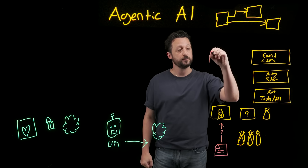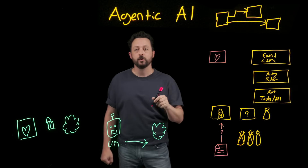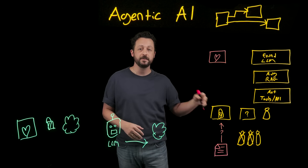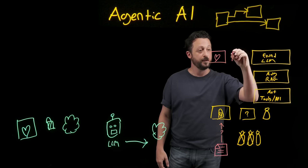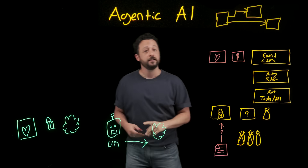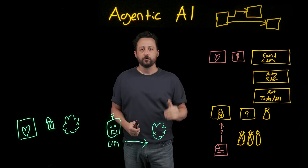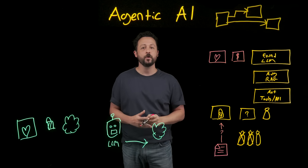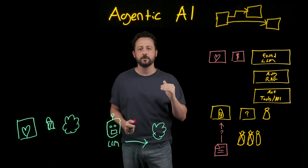This isn't just theoretical. Developers are building these private agents in the most regulated industries on earth. In healthcare, developers are building agents to help doctors summarize patient histories, craft emails, and track statuses. The agent retrieves data from electronic health records and references medical research, but the data never leaves the network. In financial services, teams at banks are building agents for fraud detection and customer service, where they analyze transactions, flag anomalies, and use customer data — and all of that must stay within their secure infrastructure.